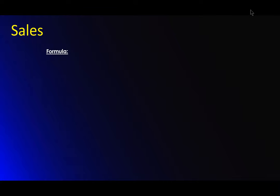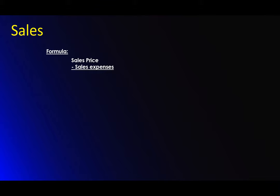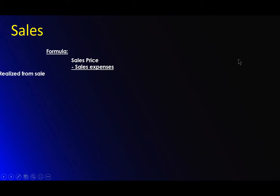The biggest thing to understand is the sale of a property typically involves an asset where you're going to be showing either a gain or a loss. It's a disposition of an asset. First, I'm going to cover just the basic calculation of the sale, and then we'll go into all the details. It's basically pretty simple to determine if you have a gain or a loss: sales price minus all the sales expenses — that's all the agencies, the existing mortgages, anything on a property, any existing loans, whatever it may be that you have outstanding on the property — that equals the amount realized from the sale.